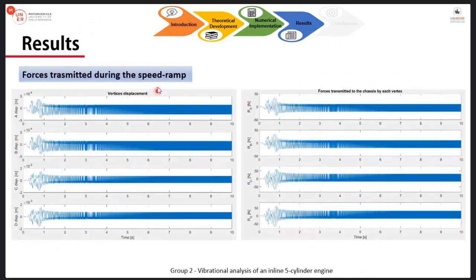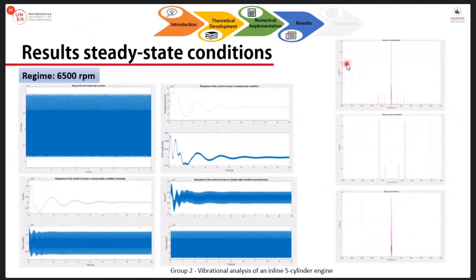Then, finally, we had to compute the forces acting on each mounting point of the four mountings, the base points of the engine. To do so, firstly, we had to evaluate the vertices displacement. From the vertices displacement, for example, A, B, C, D vertex, we got the displacement, we got the force in A, B, C, and D mounting point.